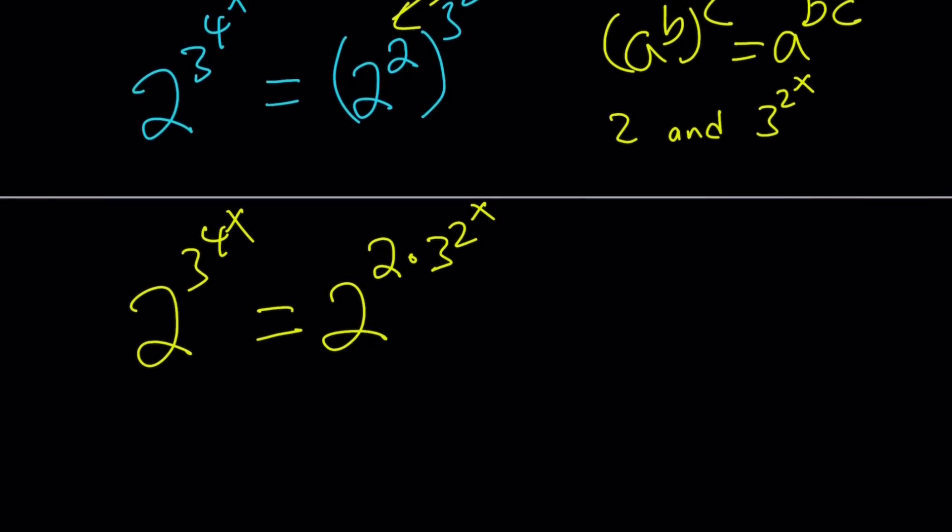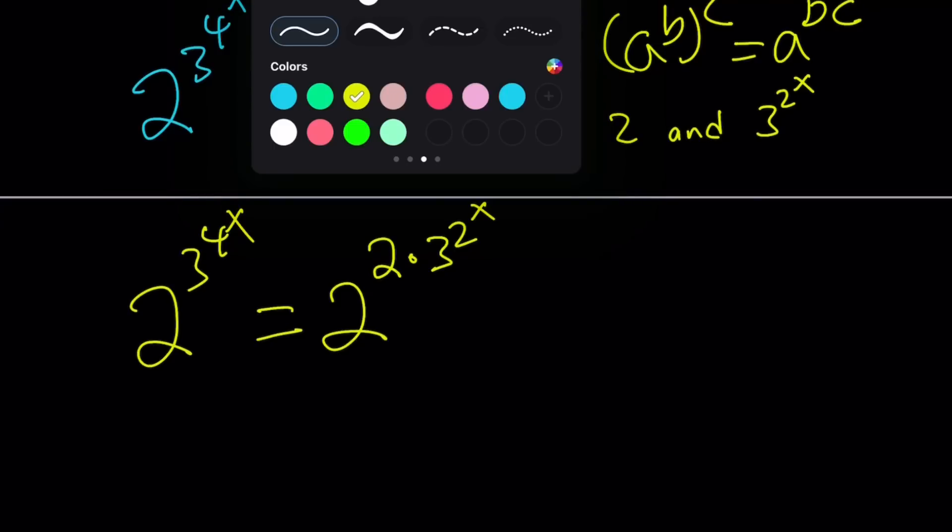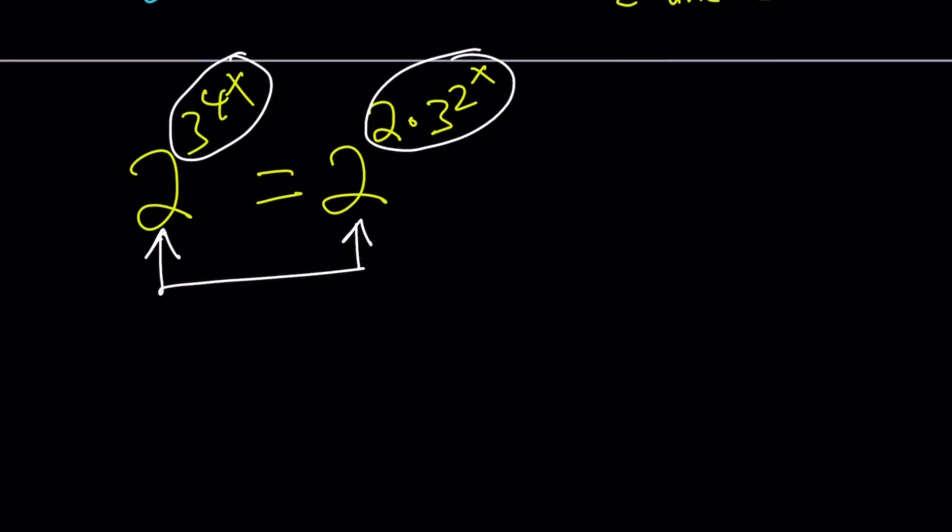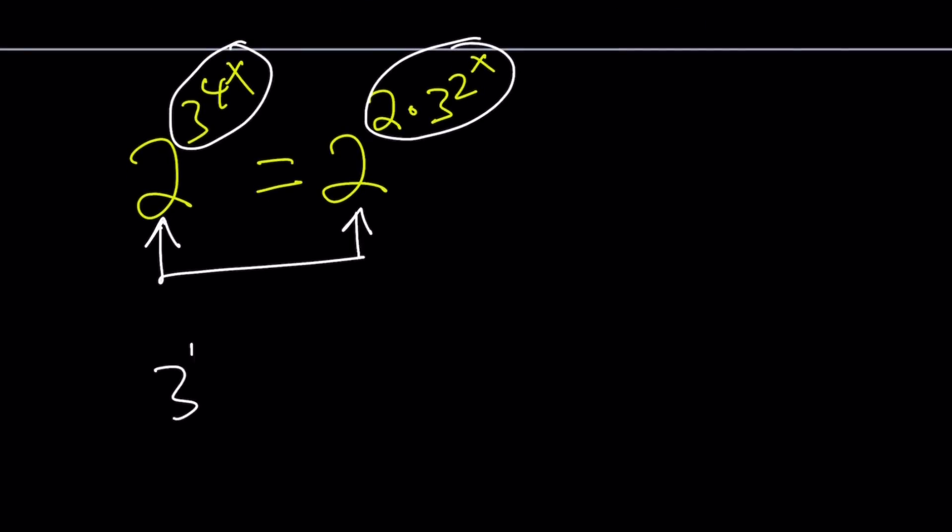But this gives us something. Obviously since we got the same bases we can now set the exponents equal. This exponent should equal this exponent. So 3^(4^x) = 2·3^(2^x). At this point you're thinking I can't combine 2 and 3 but I can combine the 3's.